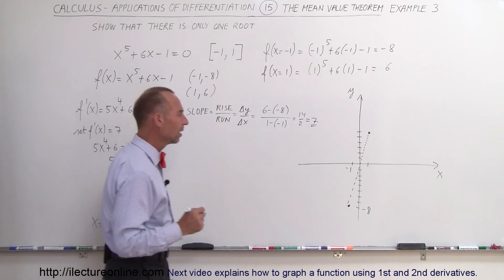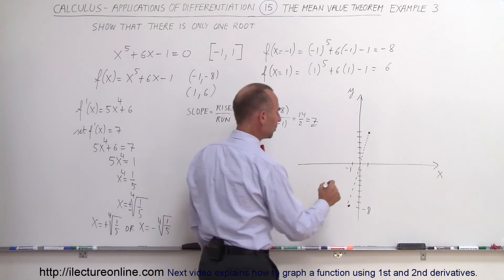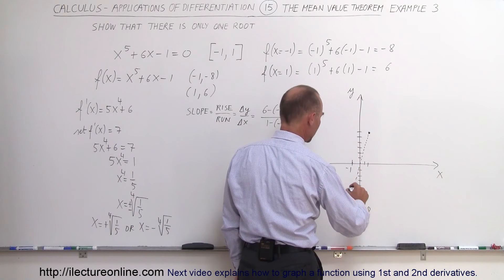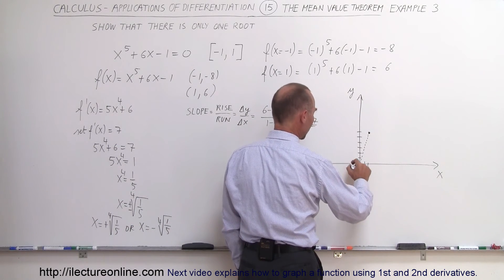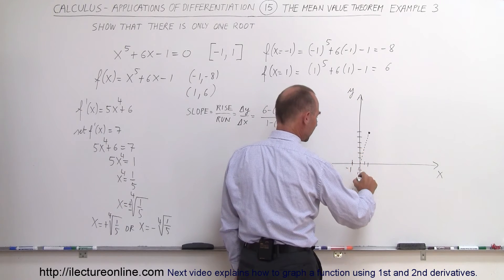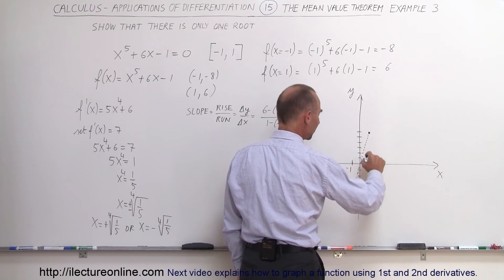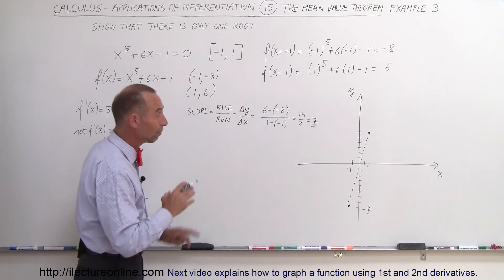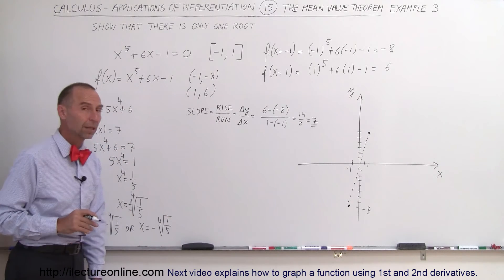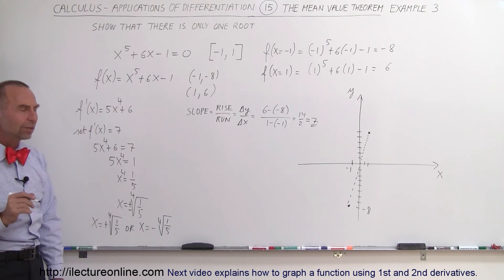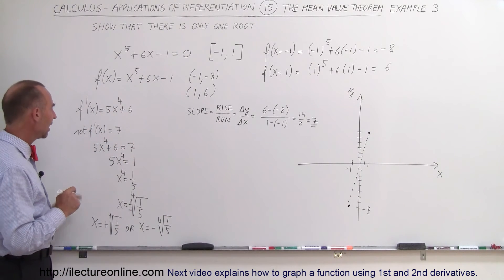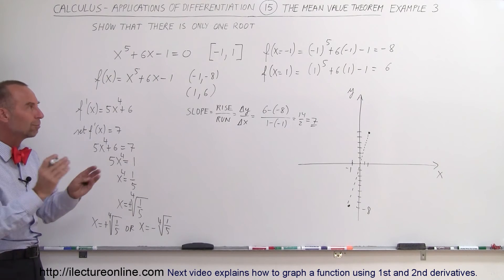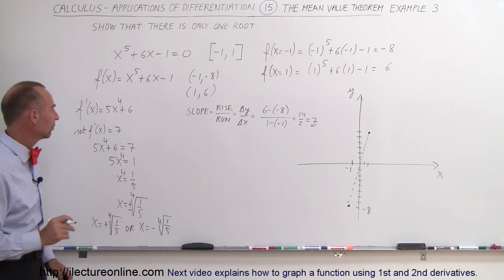Having two points where the slope matches the secant line suggests the function might go up, come back down, and rise again — potentially giving three roots. To resolve this, we'll take the derivative and set it equal to zero to check for any local maxima or minima within the interval.